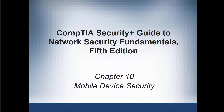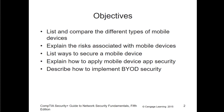Welcome to this video lecture. We're looking at the CompTIA Security Plus Guide to Network Security Fundamentals, the fifth edition, chapter 10, focusing on mobile device security. The objectives are: compare different types of mobile devices, look at the risks associated with mobile devices, list ways to ensure mobile devices are secured, how to apply mobile device app security, and we're going to look at BYOD and BYOD security.